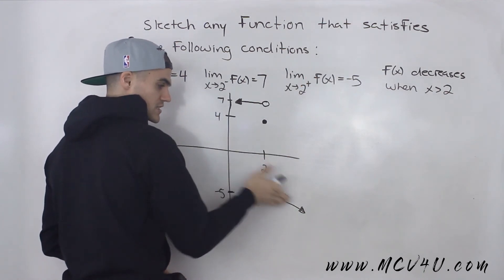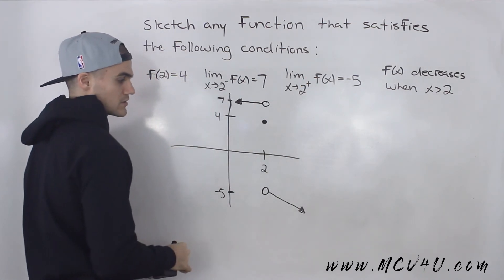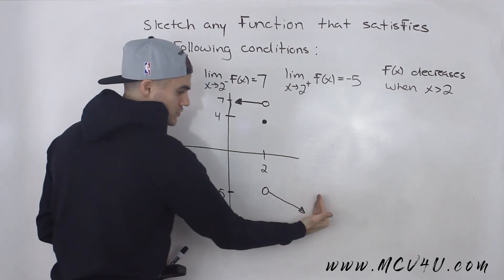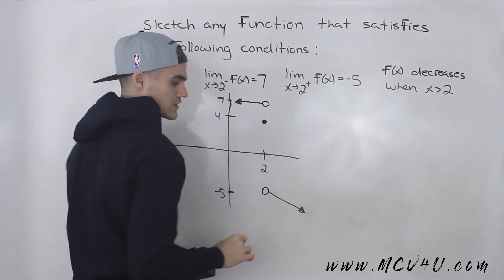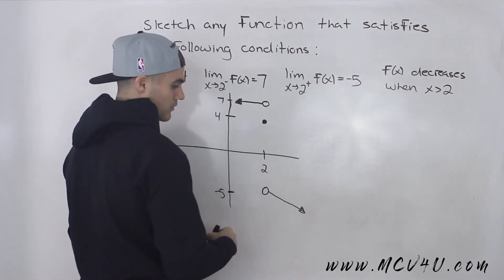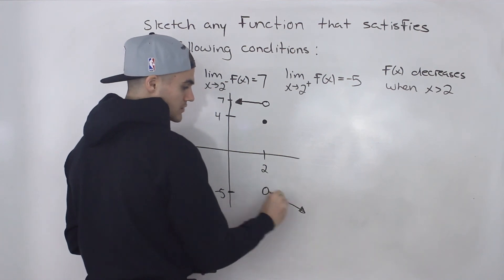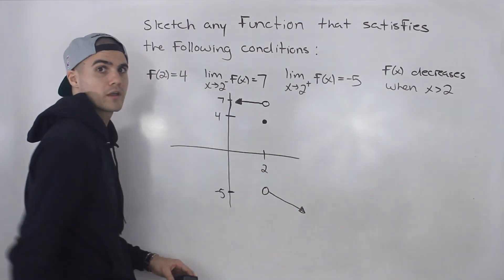And f(x) is also decreasing when x is greater than 2. Meaning that when we read from left to right, the function is going down. The y values are going down. Whether you want to make a curve for that, I just made a downward sloping line.